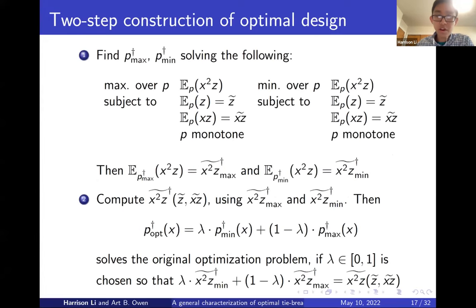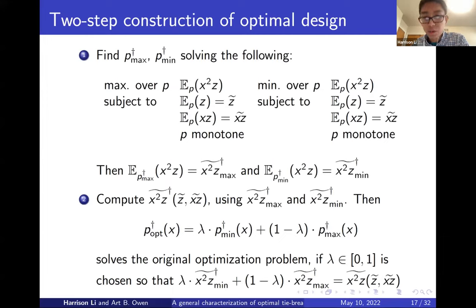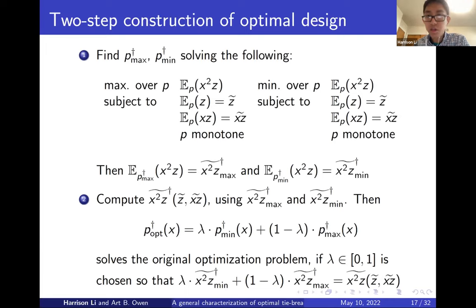The set of attainable values of E of x squared z turns out to be a closed interval, since the set of feasible designs is closed under convex combinations. The solution strategy has two steps: first, solve sub-problems to maximize and minimize E of x squared z subject to the three constraints, giving designs p max dagger and p min dagger and the endpoints x squared z min and x squared z max. Then, since efficiency is a continuous function of x squared z once E of z and E of xz are fixed, you find the optimal value in that closed interval — analytically for D-optimality, or numerically otherwise.